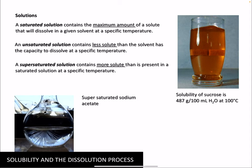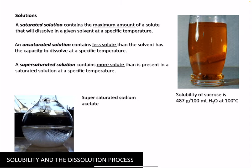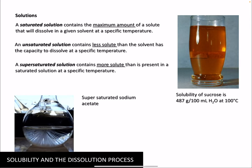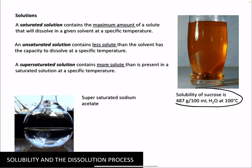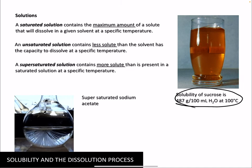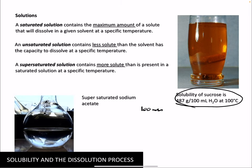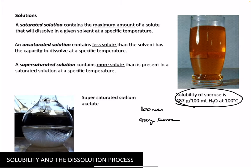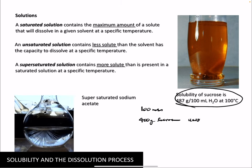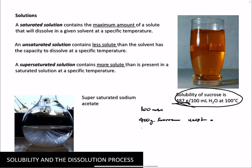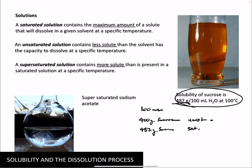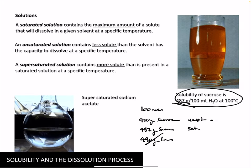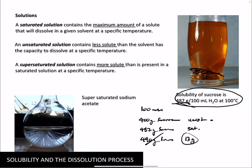Solutions can be saturated — where the maximum amount of solute dissolves at a given temperature — unsaturated, where more could dissolve, or supersaturated, where you trick the solution into holding more solute than normal. For example, the solubility of sucrose is 487 grams per 100 mL at 100°C. If you dissolve 400 grams, that's unsaturated — you can still dissolve more, up to 487 grams. At 487 grams it's saturated. If you add 500 grams, only 487 dissolves and the rest sits on the bottom.